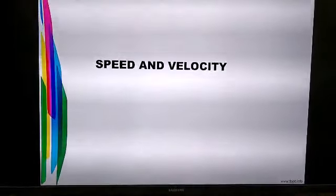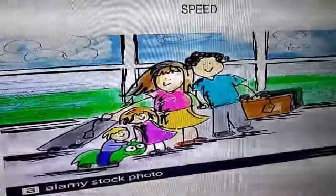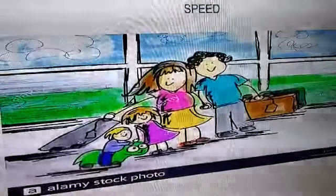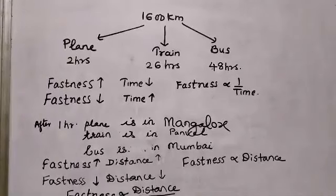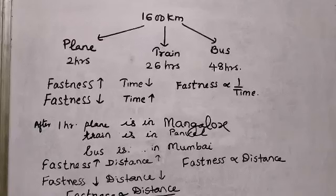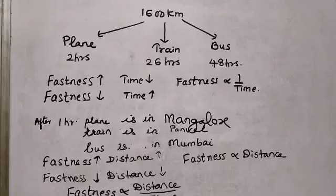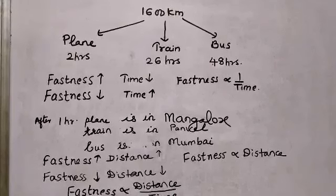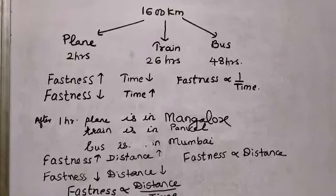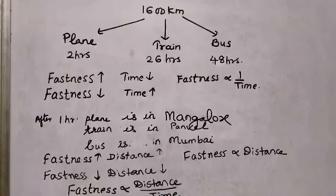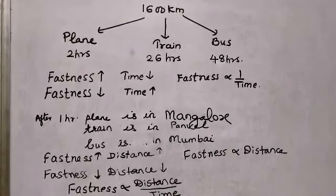Speed and velocity. This is the Naira family and they are planning to travel to Kerala. The Naira family is traveling from Mumbai to Kerala. Let's say that the distance between Mumbai and Kerala is 1600 kilometers. When they think of traveling, they have three travel options before them: they can travel by plane, train, or by bus.